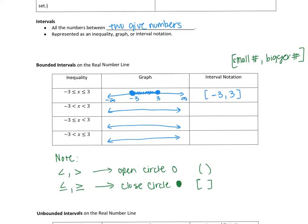Let's try another one. This one has an inequality sign that doesn't have an equal sign. Again it's negative three and three, but this time I'm going to use open circles because there's no line underneath. X is still between these two numbers, so I shade between negative three and three — same as before, but with open circles. So the interval notation this time uses parentheses: (-3, 3).